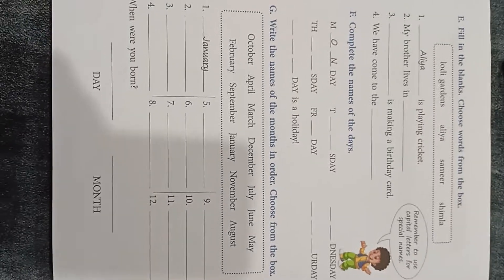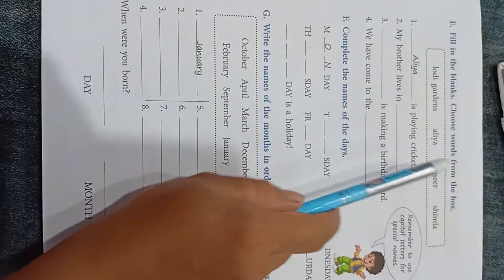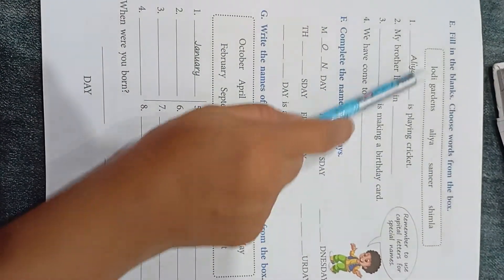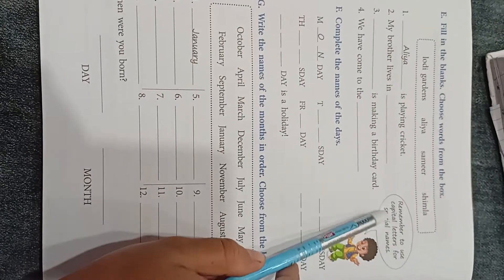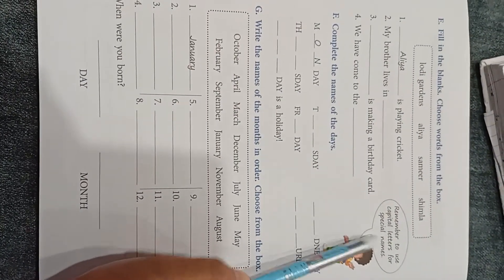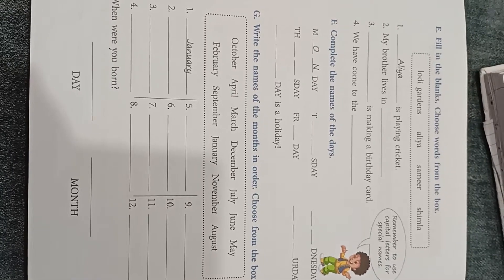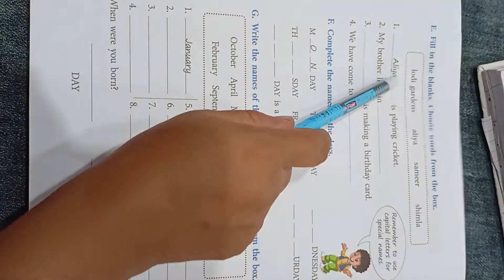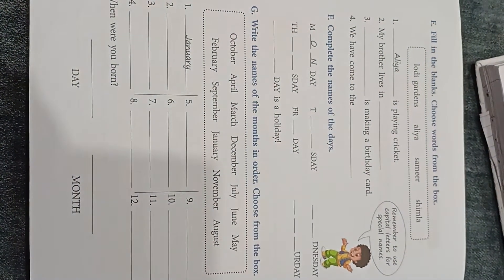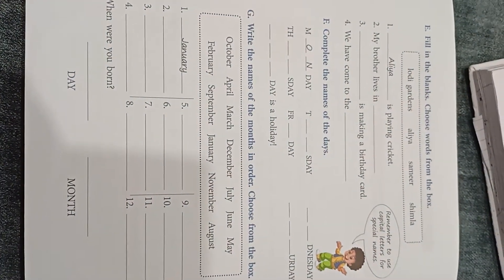Next page, page number 30, question number E: fill in the blanks. Choose words from the box. Remember to use capital letters for special names. When we write special names, we always have to write the first letter as a capital letter. Here in the boxes we do not have any capital letter, so while writing the answers in the blank you are supposed to write the first letters as capitals.